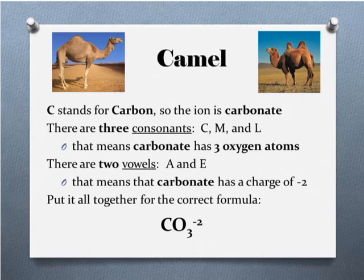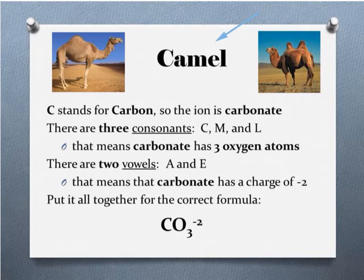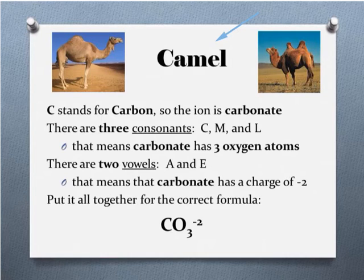The next word in our saying is camel. The C stands for carbon, so our ion is the carbonate. There are three consonants — C, M, and L — which means the carbonate has three oxygen atoms. There are two vowels, A and E, which means the carbonate ion has a charge of negative two. The formula is CO3²⁻.